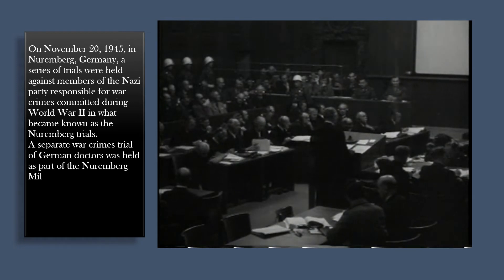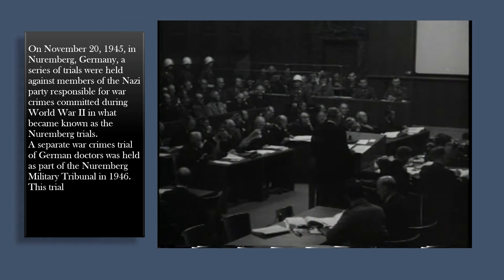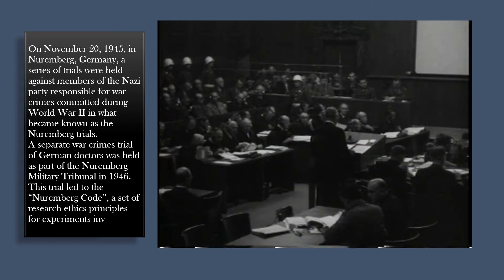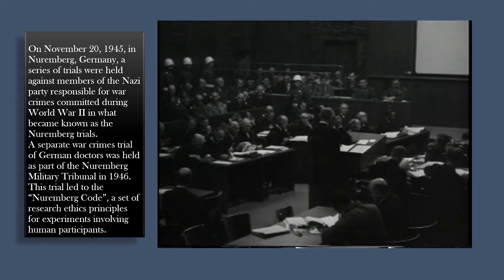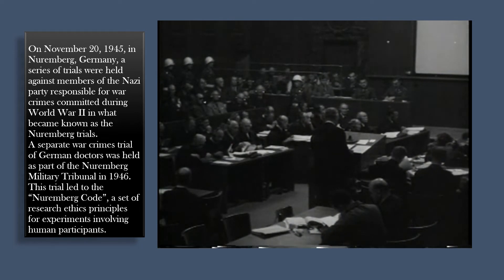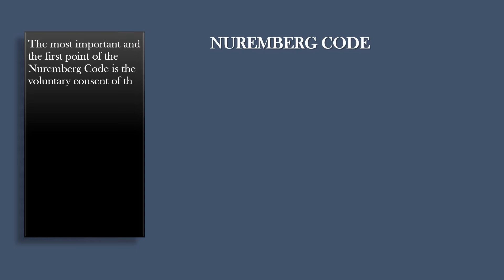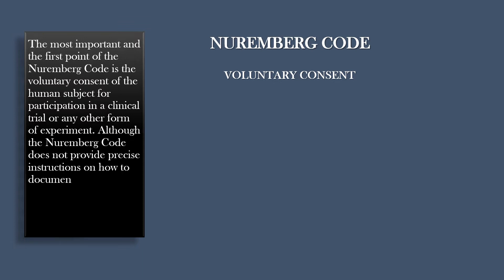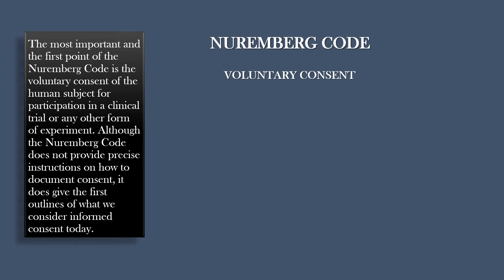A separate war crimes trial of German doctors was held as part of the Nuremberg Military Tribunal in 1946. This trial led to the Nuremberg Code, a set of research ethics principles for experiments involving human participants. The most important and the first point of the Nuremberg Code is the voluntary consent of the human subject for participation in a clinical trial or any other form of experiment. Although the Nuremberg Code does not provide precise instructions on how to document consent, it does give the first outlines of what we consider informed consent today.